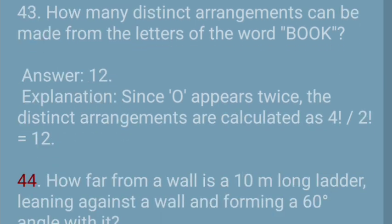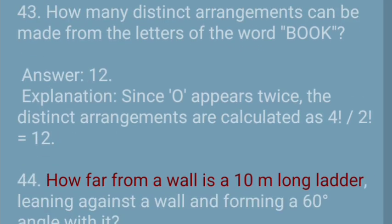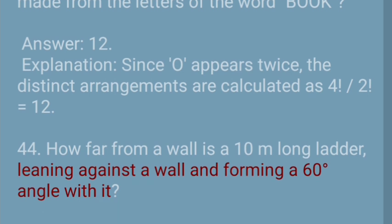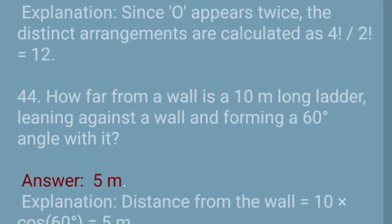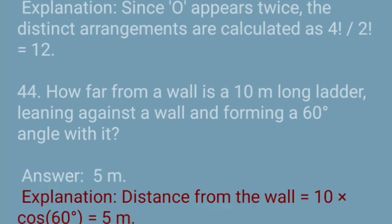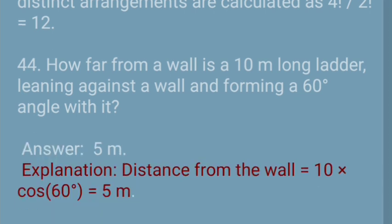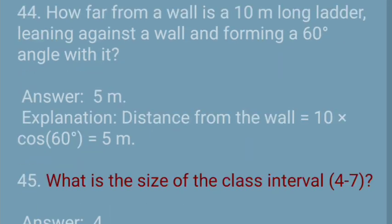Question 44: How far from a wall is a 10-meter-long ladder leaning against a wall and forming a 60-degree angle with it? Answer: 5 meters. Explanation: Distance from the wall = 10 × sin(60°) — wait, using cos: 10 × cos(60°) = 5 meters.